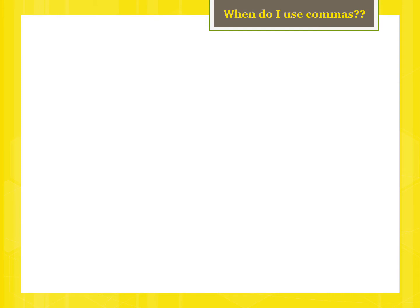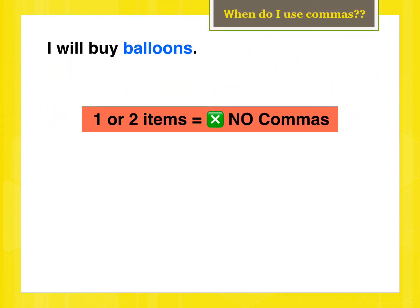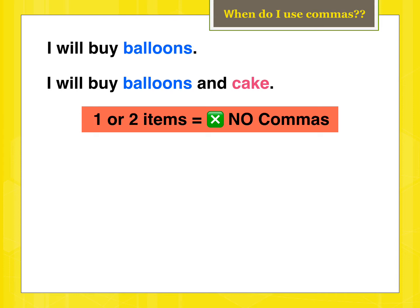I will tell you when to use commas in sentences. Because there is only one item in the list, we don't need commas — if one item, no commas. The same thing is true when we have two items. For example, if I say 'I will buy balloons,' balloons is only one item, so I don't need to write a comma after the word balloons.